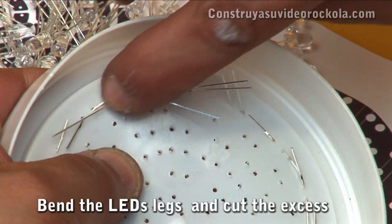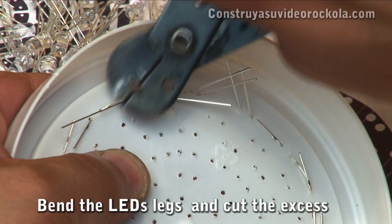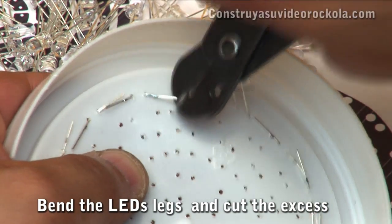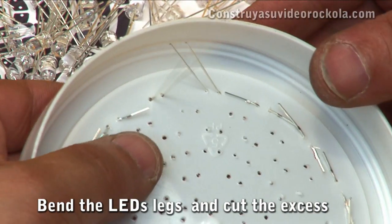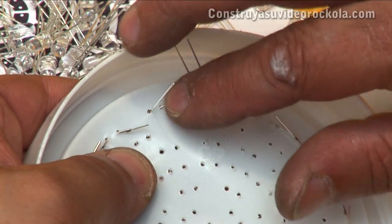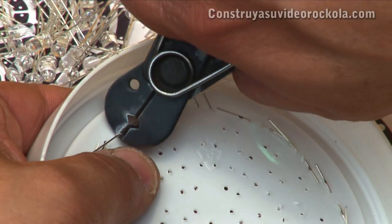We bend the legs of the LEDs and cut to sufficient size so that the positive leg of each LED connects with the negative leg of the LED immediately following. At this point, we must consider the voltage to fit our circuit.